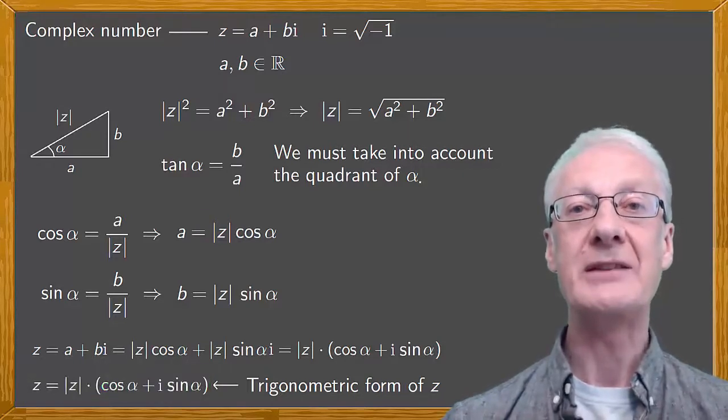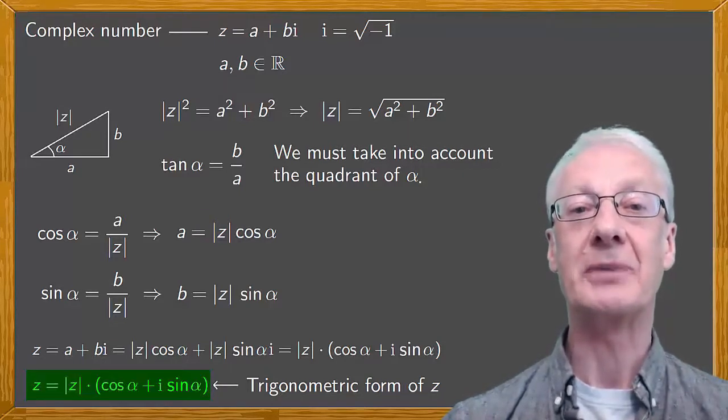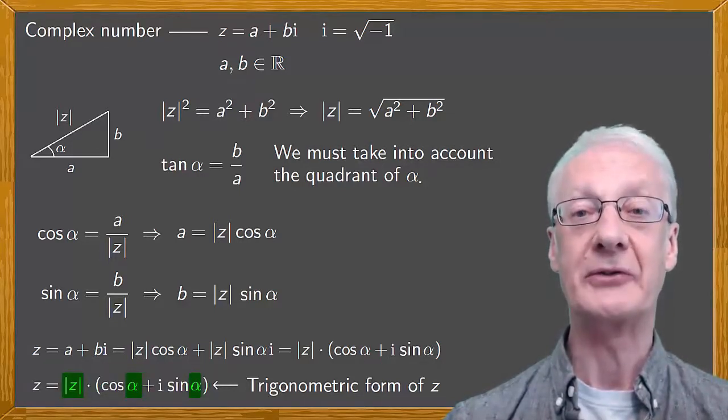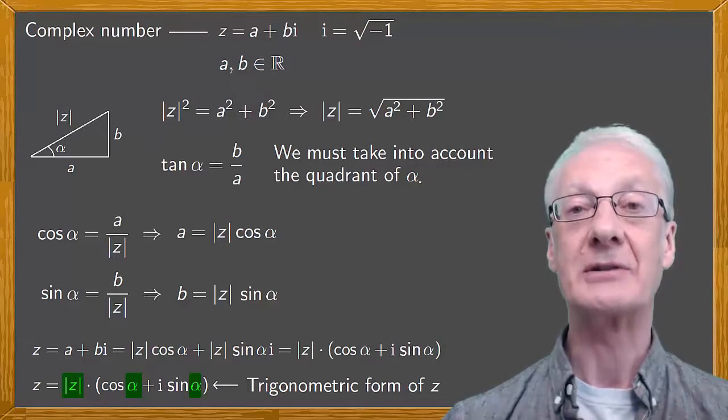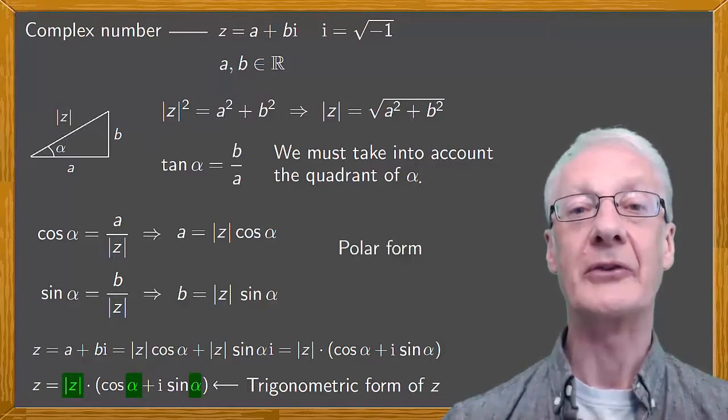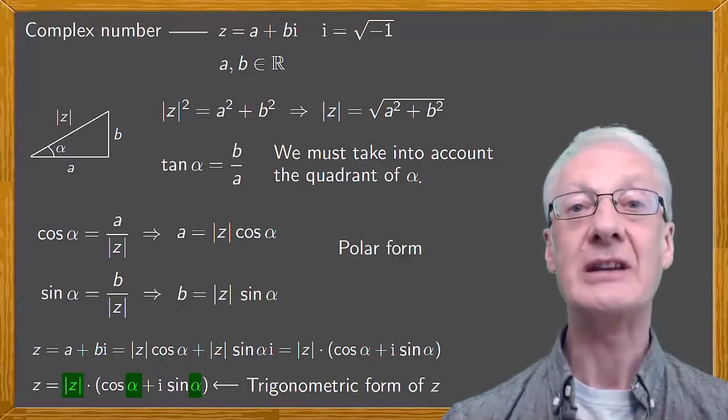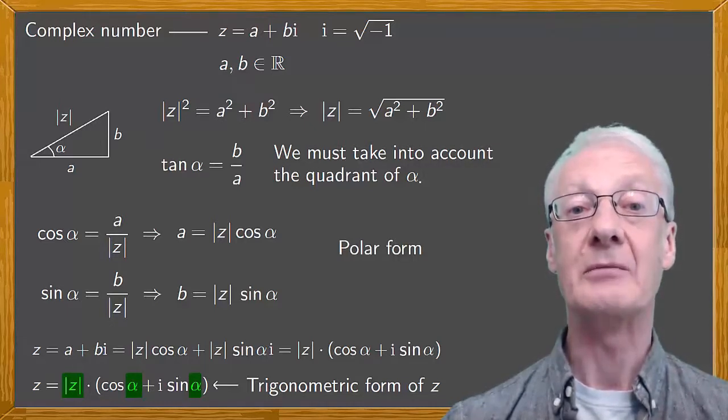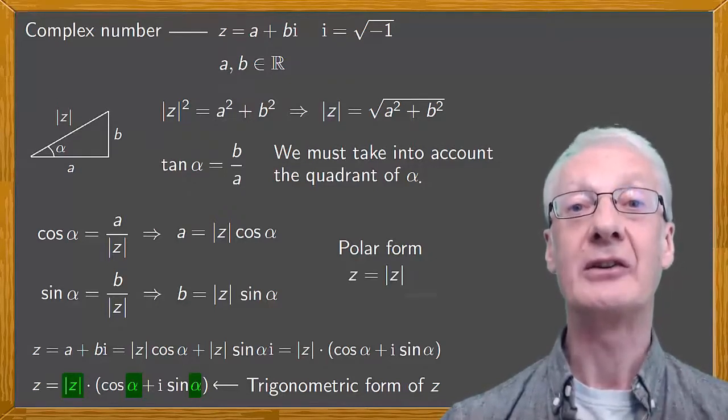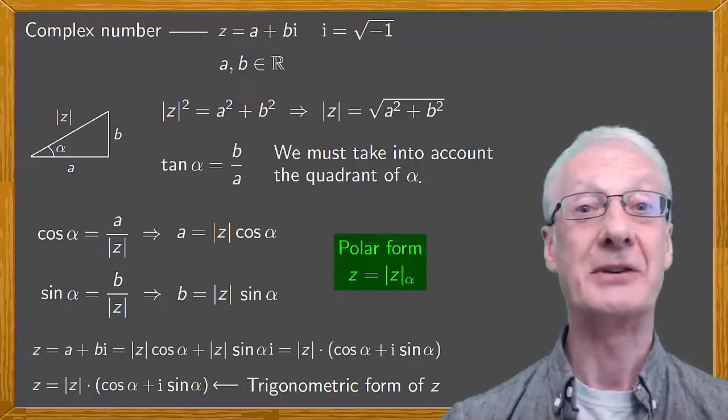Notice that to obtain the trigonometric form of a complex number z, all we need is its modulus, the modulus of z, and its argument, alpha. The polar form of z just involves writing these two quantities, the modulus of z and the argument of z, in this way: modulus of z sub alpha. It's as simple as that.